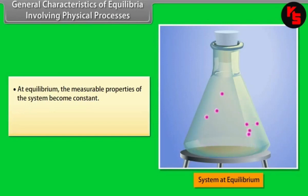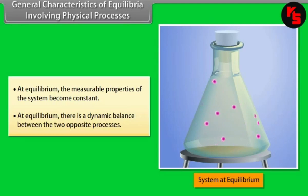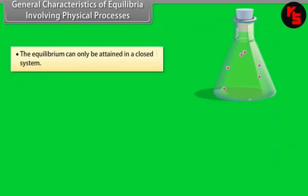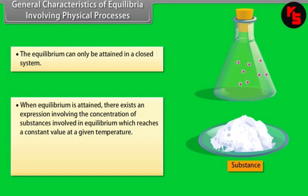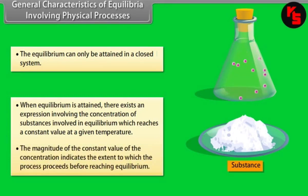General characteristics of equilibria involving physical processes: At equilibrium, the measurable properties of the system become constant. There is a dynamic balance between the two opposite processes. Equilibrium can only be attained in a closed system. When equilibrium is attained, there exists an expression involving the concentration of substances in equilibrium which reaches a constant value at a given temperature. The magnitude of this constant indicates the extent to which the process proceeds before reaching equilibrium.